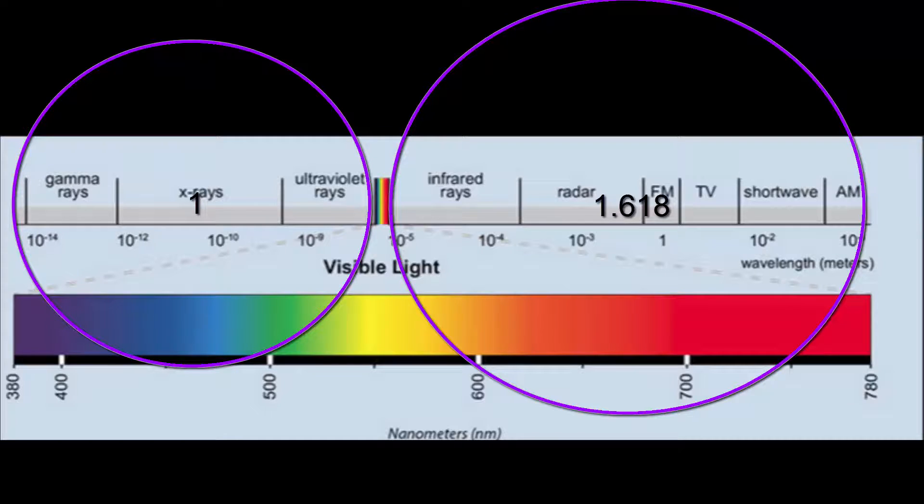But, rule number 3-1, electricity through matter produces or creates electromagnetism. And electromagnetic waves are how we see.